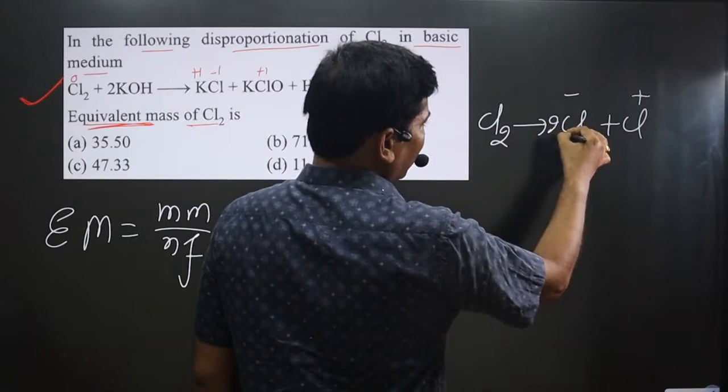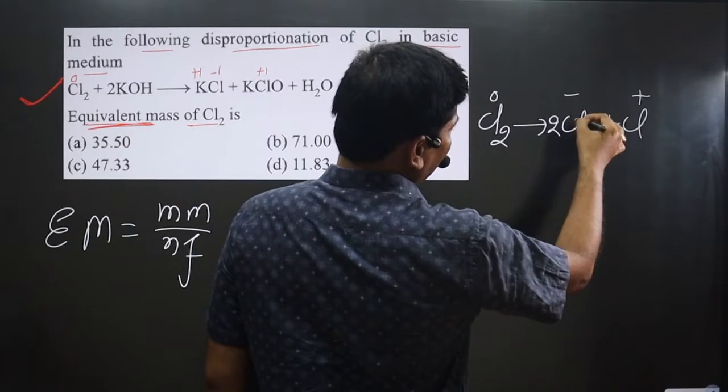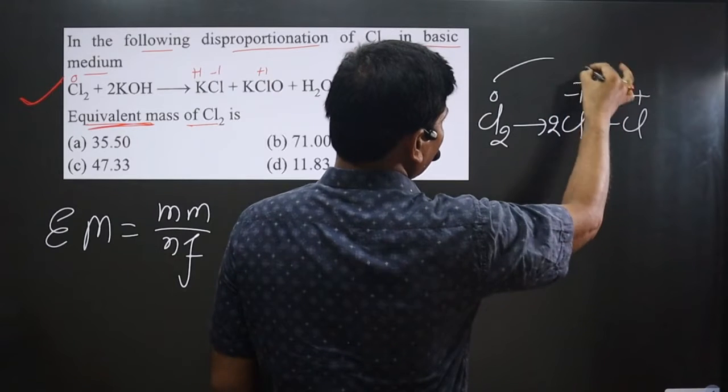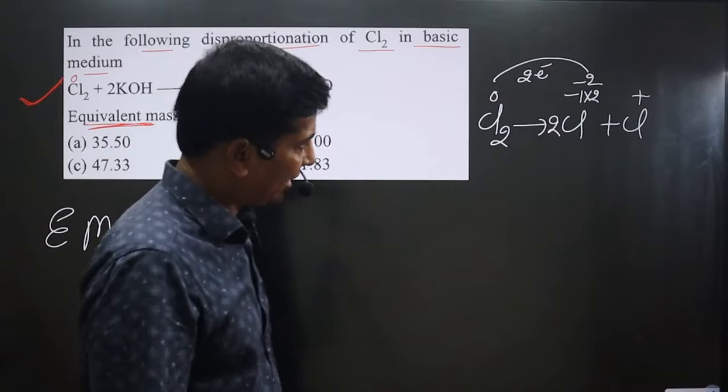Once 2 Cl are there, 1 Cl multiplied by 2. It is having 0 oxidation number. So in this case, 1 Cl is -1 then 2 Cl will be having -2 charge. Difference in oxidation number what we have: 0 minus -2 is equal to 2 electrons.